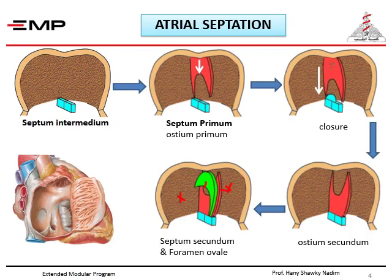Some embryonic remnants remain in the adult heart. When we look at the inter-atrial septum, we see a fossa called fossa ovalis, and the margin above it and anterior and posterior to it is called limbus fossa ovalis or annulus ovalis. The fossa ovalis comes from the septum primum, while the annulus ovalis comes from the lower margin of the septum secundum.